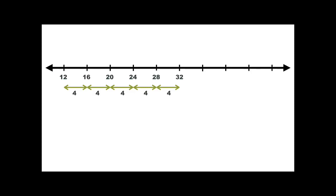In other words, if I start with the number 12 and want the next number in the list, I have to add 1 × 4. If I want the one after that, I have to add 2 × 4 to the first number 12.